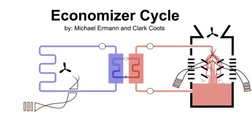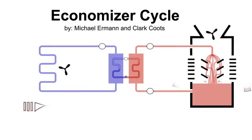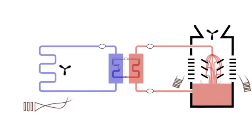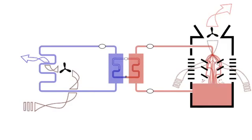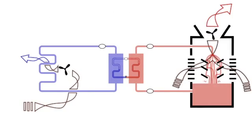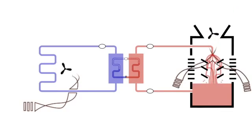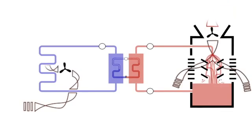Economizer cycle. Buildings, especially in the interior of large structures, often require mechanical cooling even on very cold nights.